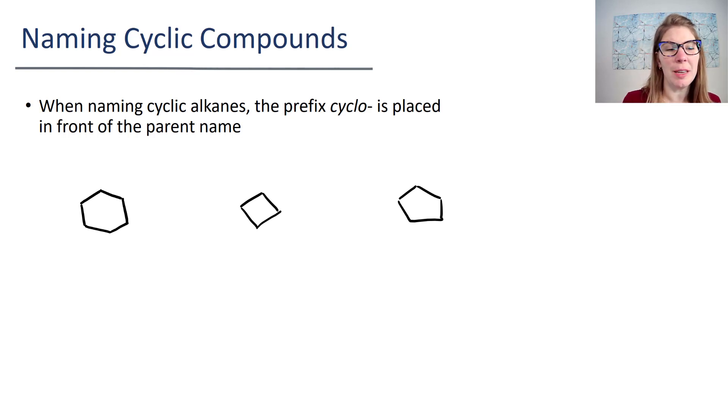Because they are a ring, they will be special in the case that they have a prefix of cyclo in front of the parent name. What you're going to do first is figure out how many carbons are in the ring. So here I have a six carbon ring, and in this six carbon ring I am going to call this a hex, right, because there's six, and an ane because it's an alkane. But because it's a ring I'm going to put a cyclo in front of that, so I'm going to say cyclohexane is the name for this one.